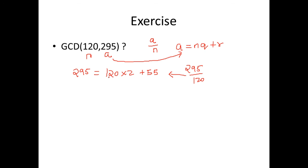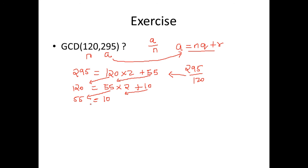Next, we take 120 and the remainder 55, and represent 120 in the same format: 55 into 2 is 110, remainder is 10. Then 55 equals 10 into 5 plus remainder 5. The next step: 10 is nothing but 5 into 2 plus remainder 0. Once we reach 0, we stop, and the remainder from the previous step — 5 — is the greatest common divisor.